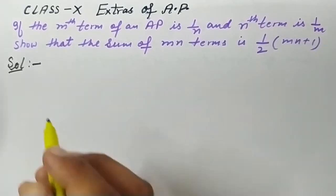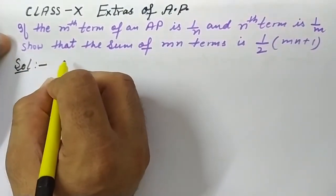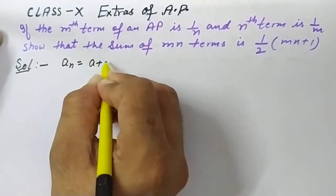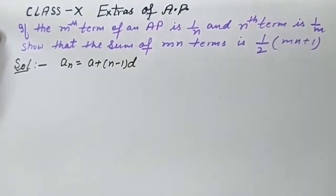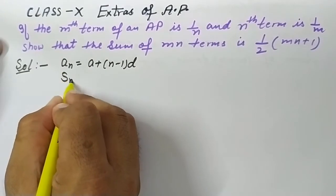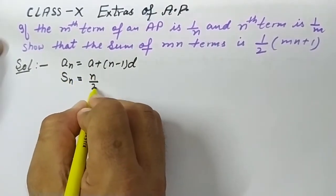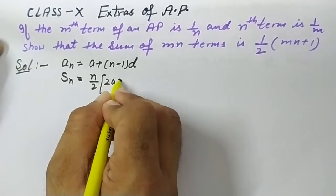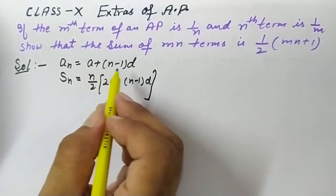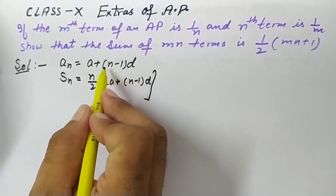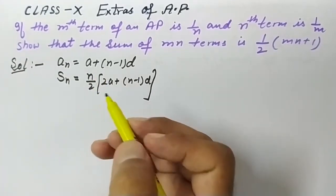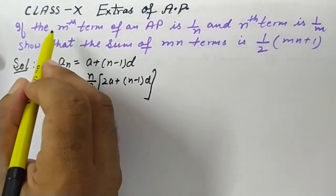The first formula is to find the general term of an AP: aₙ = a + (n - 1)d. The second formula is to find the sum of n terms of an AP: Sₙ = n/2 × [2a + (n - 1)d]. Here, 'a' is the first term, 'd' is the common difference, and 'n' is the number of terms.